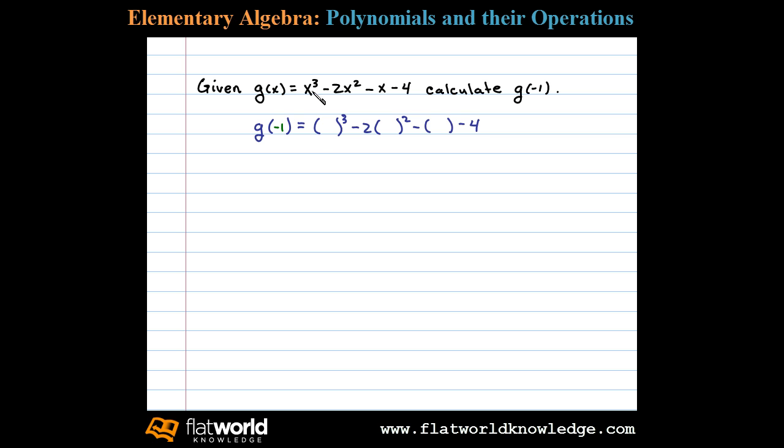In this case, x is negative 1. Substitute in the values and then simplify. Negative 1 to the third power is negative 1. Negative 2 times negative 1 squared is negative 2. Negative negative 1 is plus 1.